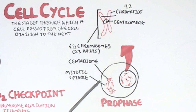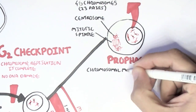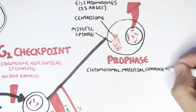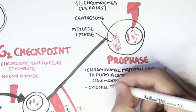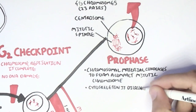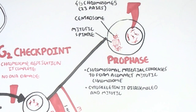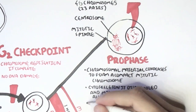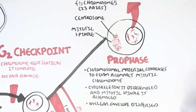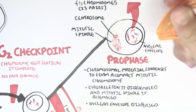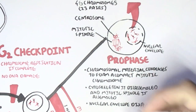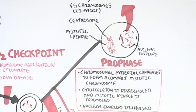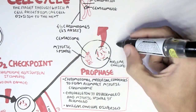Centromere and centrosomes sound familiar, but don't get mixed up. During prophase, the chromosomal material condenses to form a compact mitotic chromosome, so the chromosomes become visible. The cytoskeleton is then disassembled, and the mitotic spindle is assembled — so the centrosomes form a mitotic spindle. The nuclear envelope is also dispersed, so the nuclear membrane essentially starts degrading to allow these chromosomes to be free.